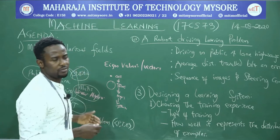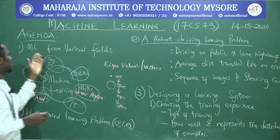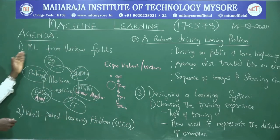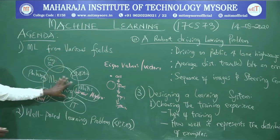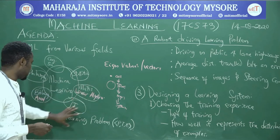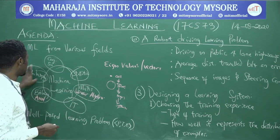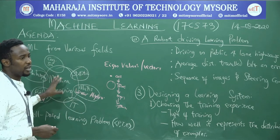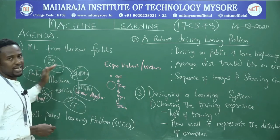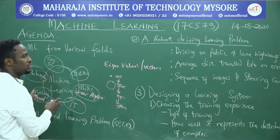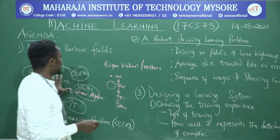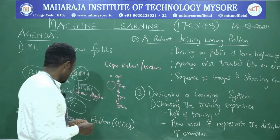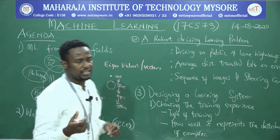Machine learning is not just computer science alone — it includes statistics, mathematics, information technology, biology, philosophy, and more. There are other subjects that also revolve around it. Now let's look at what we mean by a well-posed learning problem, getting back to how Tom Mitchell defined machine learning.